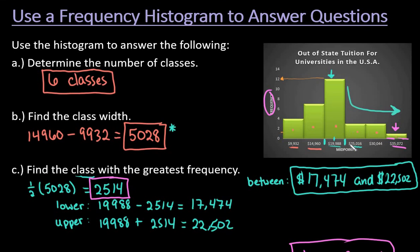You could describe the overall pattern. There's some things you could point out. We could say that majority fall in the class where the midpoint is 19,988, or you could say that majority fall between, or the largest amount fall between, 17,474 and 22,502.